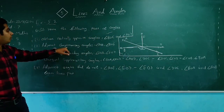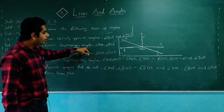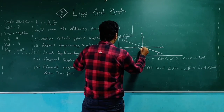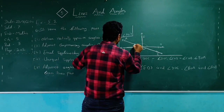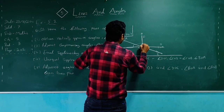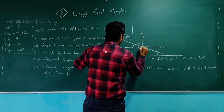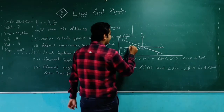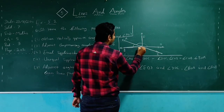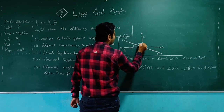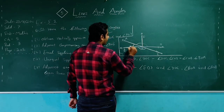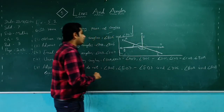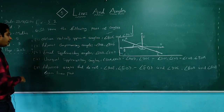Part 2: adjacent complementary angles. We need angles that are both adjacent and complementary (sum = 90°). The angles BOA and AOE satisfy both conditions — they are adjacent and their sum is 90°, so they are adjacent complementary angles.